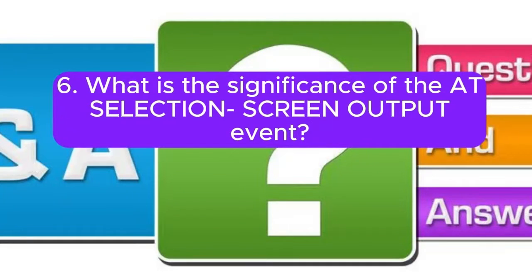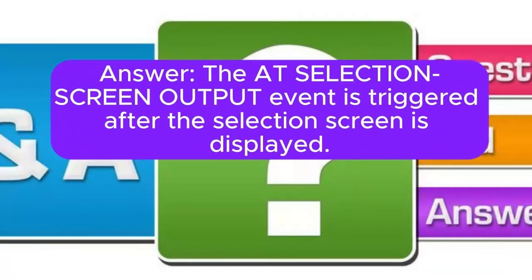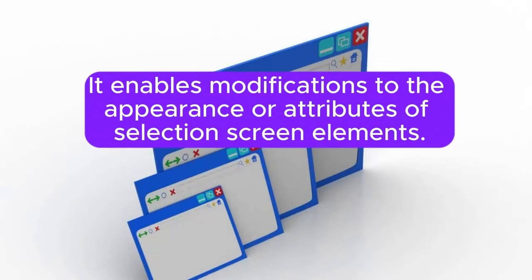Question 6: What is the significance of the AT SELECTION-SCREEN OUTPUT event? Answer: The AT SELECTION-SCREEN OUTPUT event is triggered after the selection screen is displayed. It enables modifications to the appearance or attributes of selection screen elements.